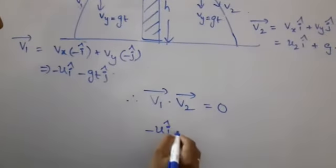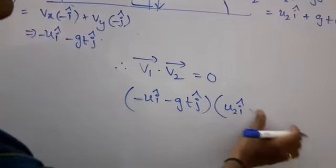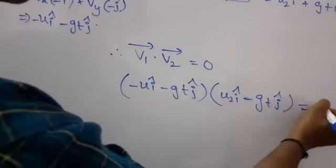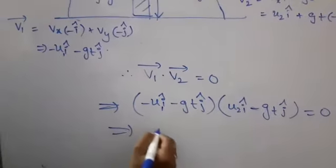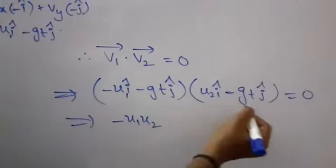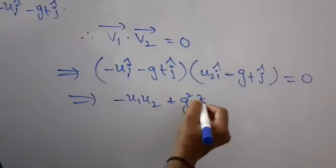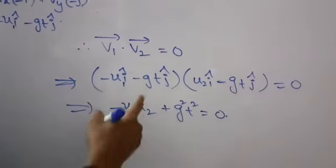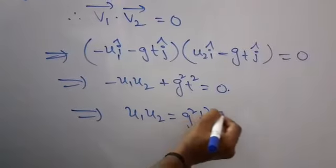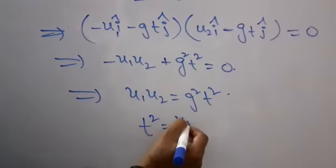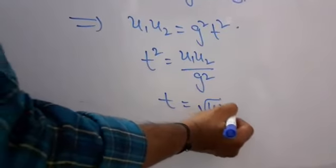Computing the dot product: (−U1·i-cap − G·T·j-cap)·(U2·i-cap − G·T·j-cap) = 0. This gives: −U1·U2 + G²·T² = 0, since i·i = 1 and j·j = 1. Therefore U1·U2 = G²·T², giving T = √(U1·U2) / G.